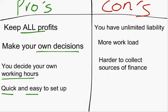Some of the cons include the fact that you have unlimited liability. There's going to be a video covering what unlimited and limited liability is. Unlimited liability basically means if you become bankrupt and you're in debt, the business can take everything you own until you pay off that debt. Also, there's a higher workload, and it's harder to collect sources of finance that can give your business more money to invest in things and, as a result, grow.